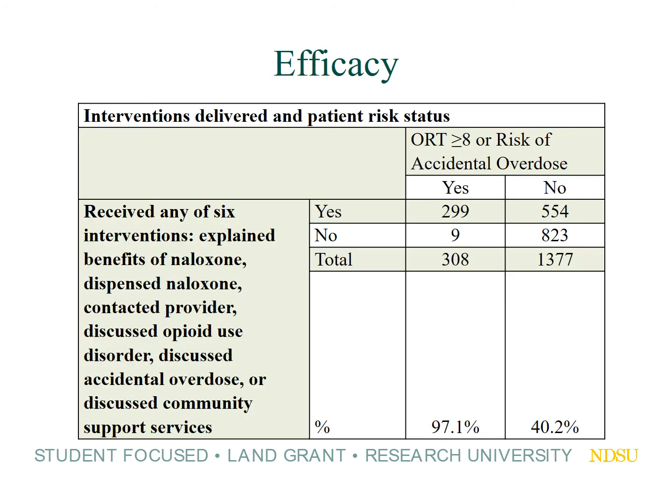Here's what that looks like: in the columns you can see individuals who were identified as having an ORT score of greater than or equal to eight, or at risk of accidental overdose. 97.1 percent of them — 299 out of 308 individuals — received any of the six interventions. In contrast, those individuals defined as at lower risk had only 40 percent receiving those interventions. This tells us we're delivering the interventions to those who need them most, and not spending time delivering interventions to patients who truly do not have that risk.